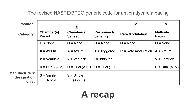Column two is the chamber that we are sensing in. In a VOO, AOO, or DOO device, we are not sensing in any chamber. We are also not responding to any sensed event. If we're not sensing, how can we respond to it anyway? So this is literally what those mode codes mean — we are pacing, we are not sensing, and because of that, we are unable to respond to sensing.